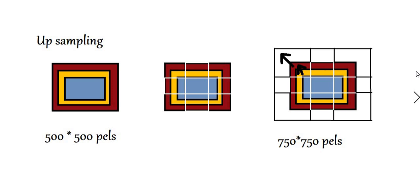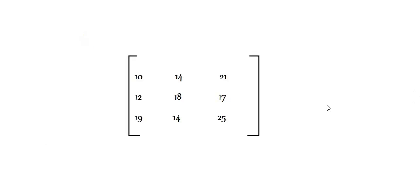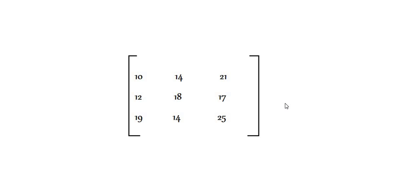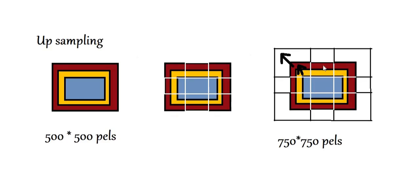Nearest neighbor interpolation is the simplest technique for upsampling. When upsampling, you don't create any new data — you only use the given data, which is the intensity values of existing pixels. In nearest neighbor interpolation, you take the values of pixels and duplicate them to nearby, new locations.